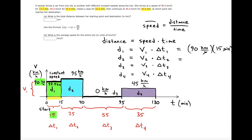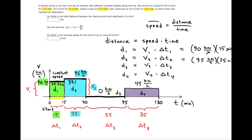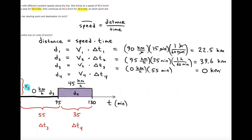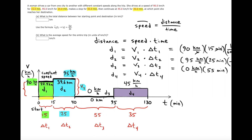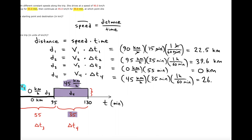For D2, we multiply the height of the blue rectangle, V2 = 95, by ΔT2 = 25 minutes, giving about 39.6 kilometers. For D3, the speed is zero, so this contributes no distance to the overall trip even though the time is 55 minutes. The final calculation is 45 kilometers per hour times 35 minutes, giving about 26.3 kilometers.